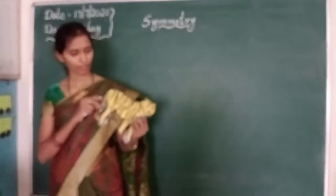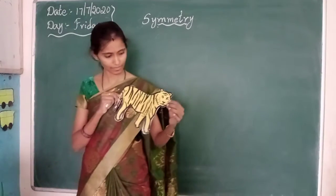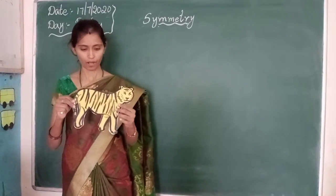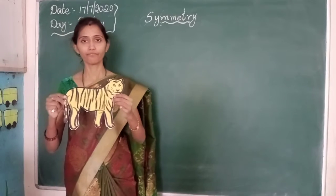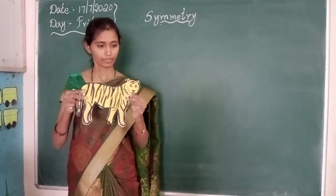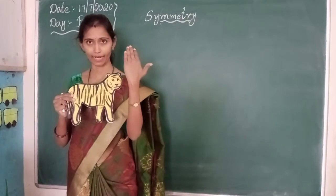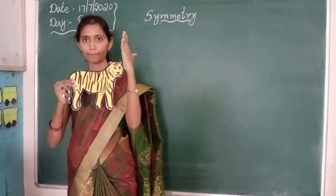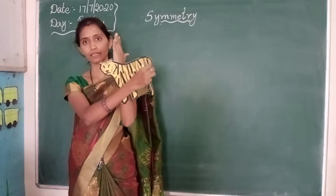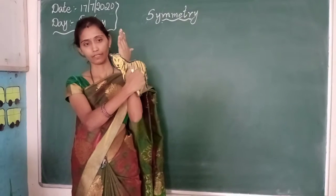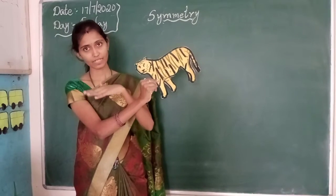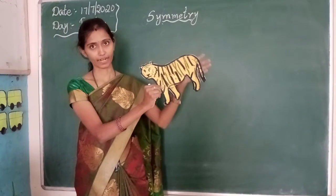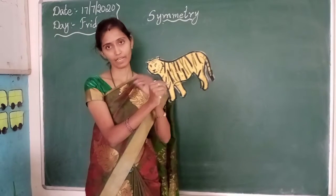Children, have you ever observed a tiger? Yes, this is a tiger. Now this is one shape. If I flip a shape — children, if I flip this tiger to the other direction, what do you observe? The left side becomes right and the right side becomes left.